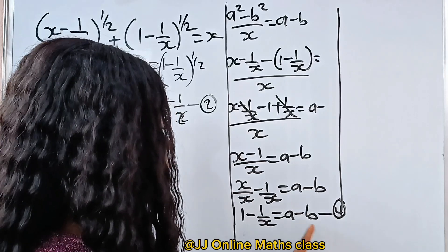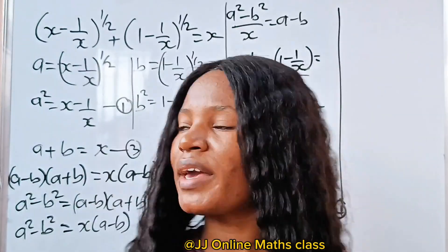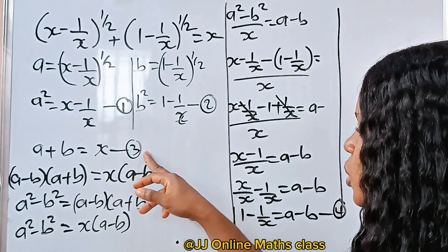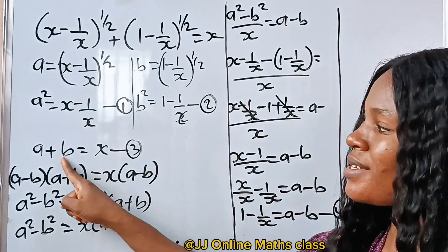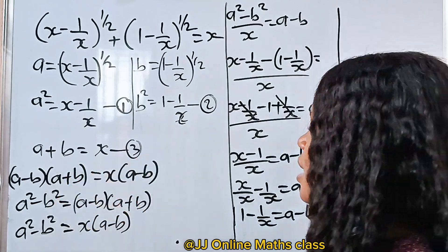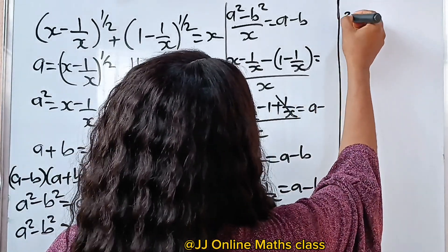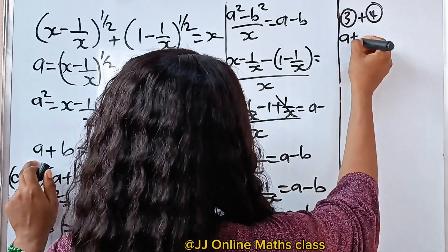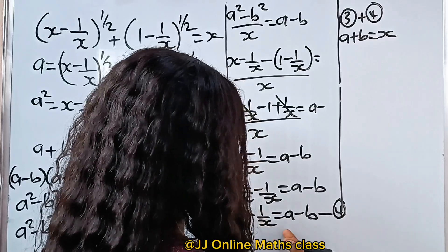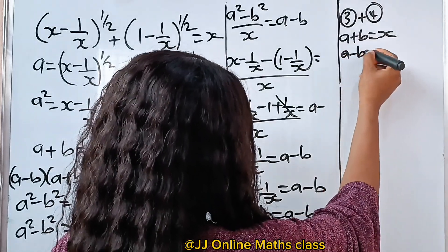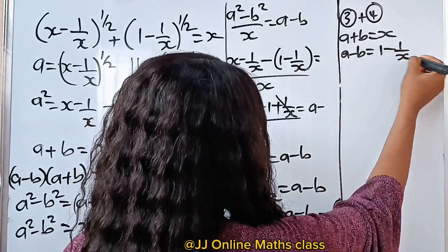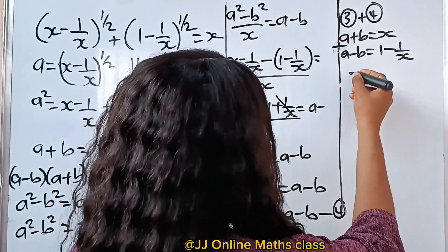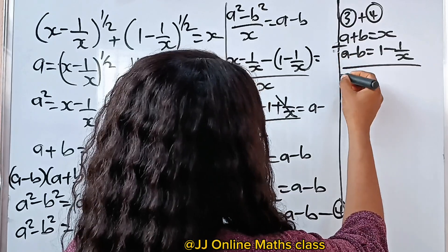Recall we have a minus b equal to 1 minus 1 over x, and a plus b equal to x. If we add equation 3 and equation 4, we will be able to cancel out b. Equation 3 says a plus b equals x, and equation 4 says a minus b equals 1 minus 1 over x. Adding them together, a plus a gives us 2a, and b plus minus b is 0, so b is eliminated.